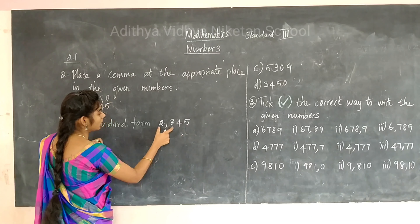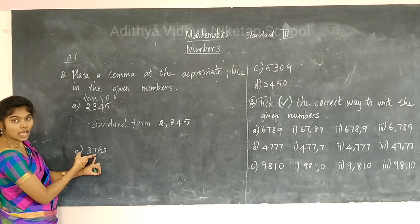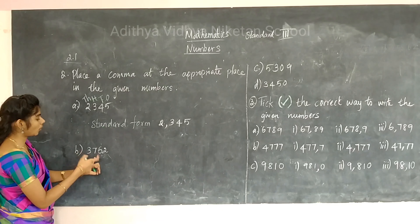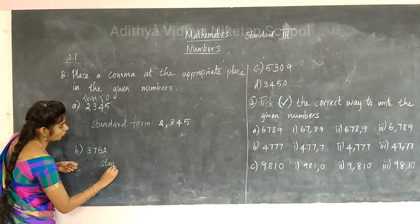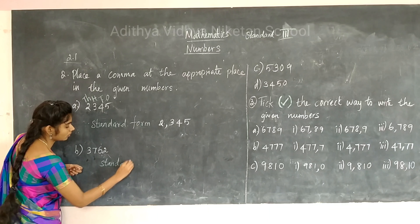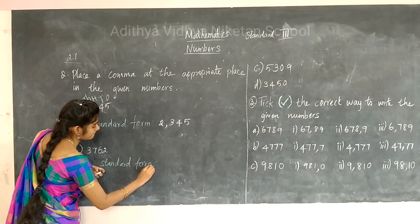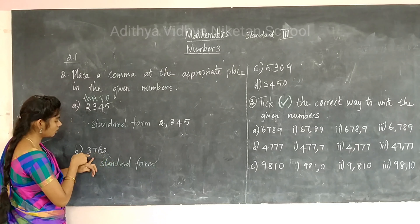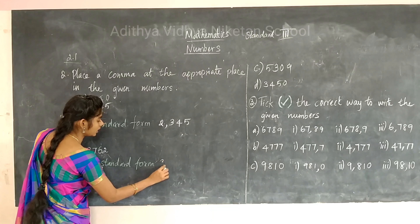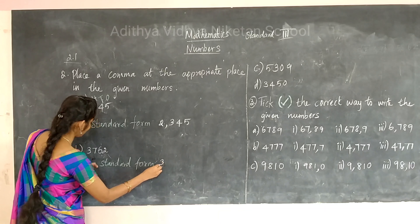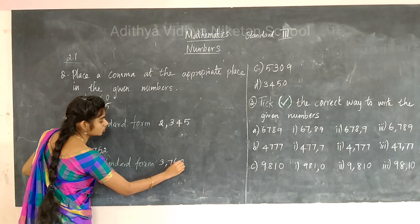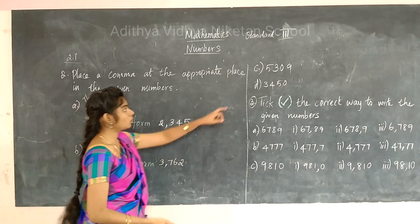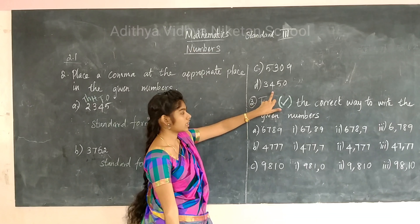Let's see the next sum. Where do you place the comma? In between the hundreds place and the thousands place. So in standard form you write 3,000 — comma — then 762, making it 3,762. The remaining two problems you will do as an assignment.